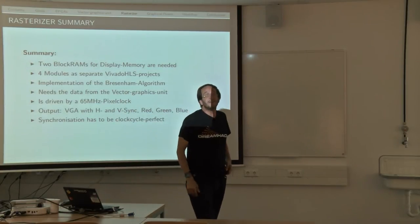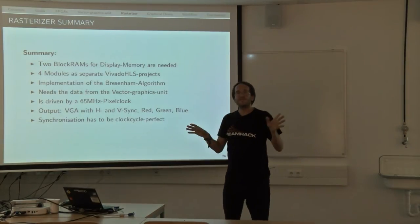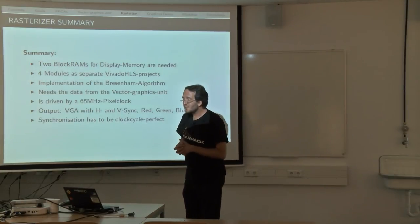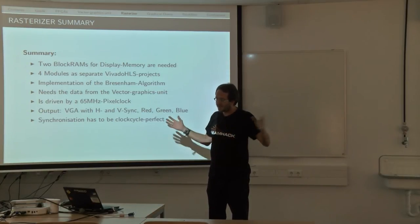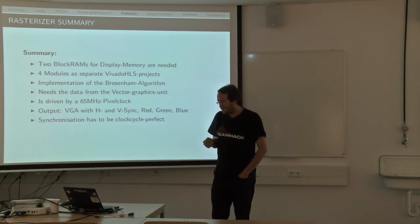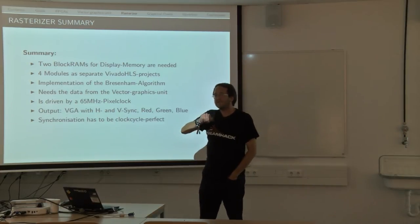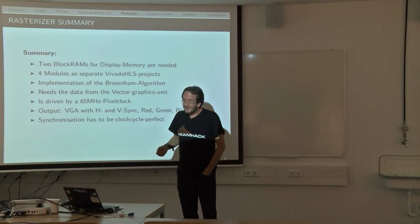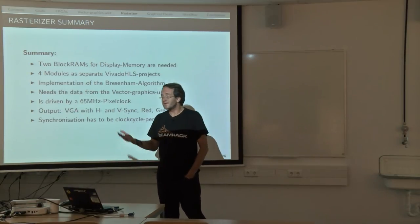To summarize: we need two block RAMs each sized to hold exactly one picture — two picture-sizes total. Four modules have been generated as separate Vivado HLS projects and put together afterwards. The implementation includes the Bresenham algorithm for writing data. We need data from the vector graphics unit for use inside the rasterizer. All of this is driven by a pixel clock of 65 MHz. The output is on VGA via five signals: H-sync, V-sync, red, green, and blue.